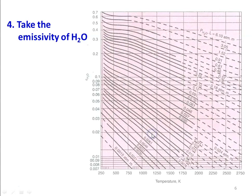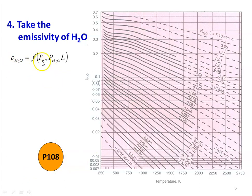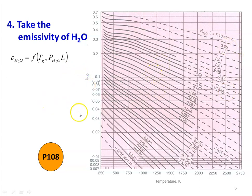Then we calculate the emissivity of H₂O using the graph on page 108 of the heat and mass transfer data book. ε_H₂O is a function of gas temperature TG and the product PH₂O × L (partial pressure of water vapour times mean beam length). The x-axis is temperature, the lines are for constant values of PH₂O × L, and the y-axis is ε_H₂O. Knowing these two values, you can find ε_H₂O.